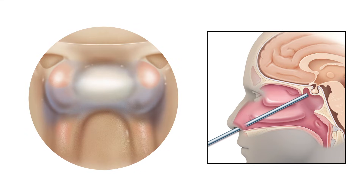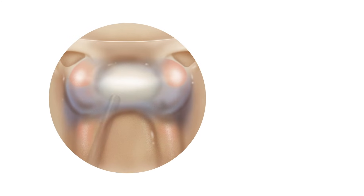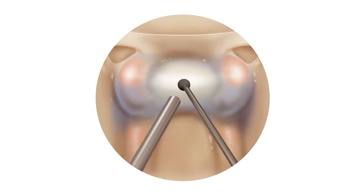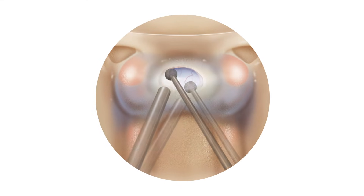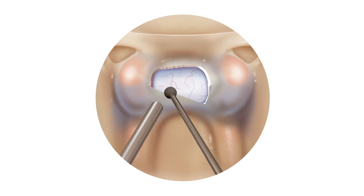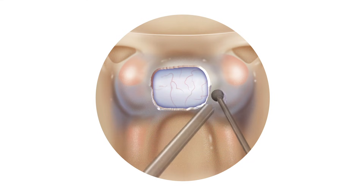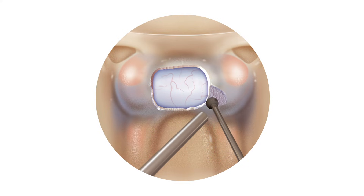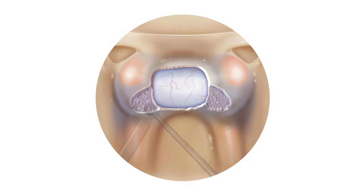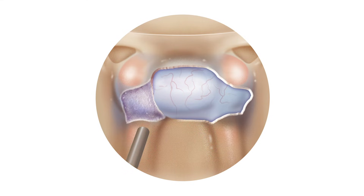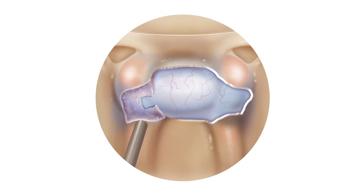Here we can see the location of the endoscope inside the sphenoid sinus and the close-up view it provides. We use a high-speed drill to carefully remove the bone that covers the pituitary gland. We continue drilling laterally to perform a wide exposure into the anterior wall of the cavernous sinus on each side of the pituitary gland. We perform this eggshell technique, where very thin bone is left behind so we can use a Kerrison rongeur to remove it safely and entirely.